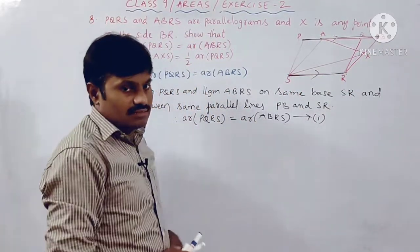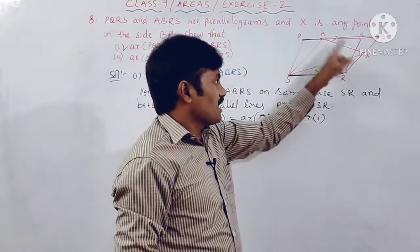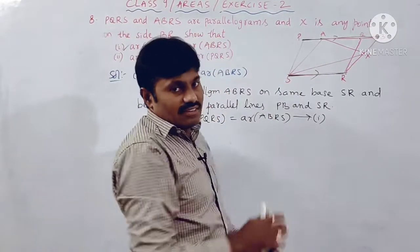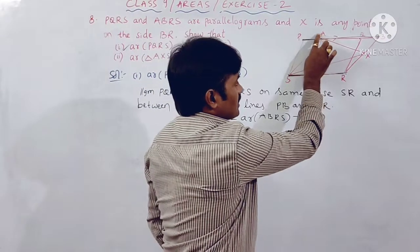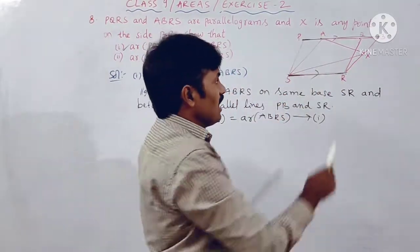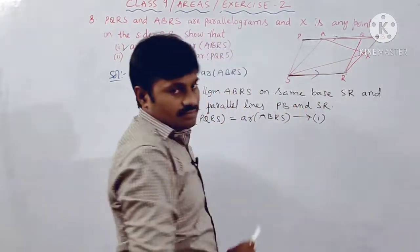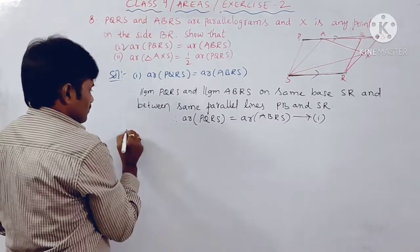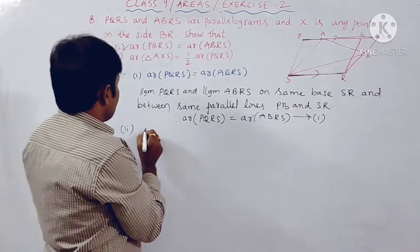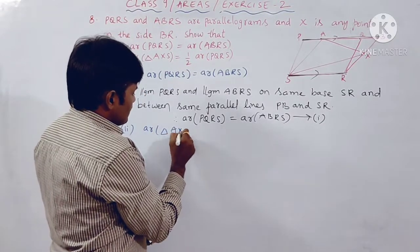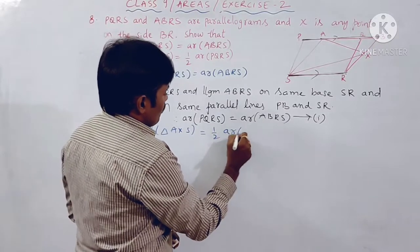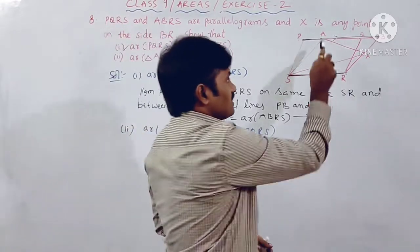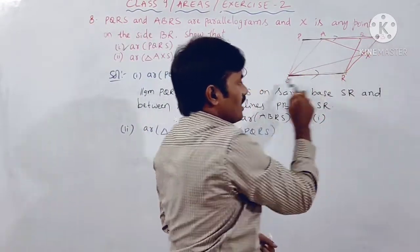Since in part one we proved that area of PQRS equals area of ABRS, it is enough to compare triangle AXS with parallelogram ABRS. Now, triangle AXS and parallelogram ABRS are on the same base AS. The common side for both the triangle and the parallelogram ABRS is AS.